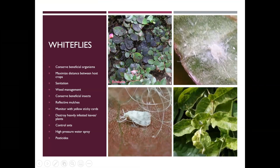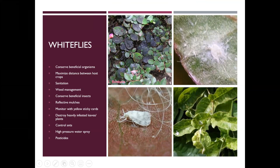Whiteflies — oh, that's a terrible one. Whiteflies are another small soft-bodied insect with piercing-sucking mouthparts that cause yellowing, curling, and stunting. They are honeydew producers, which leads to sooty mold, and they're found on the undersurface of leaves. The immatures are stationary, but the adults have wings and are capable of flying around. If you see something that looks like a white gnat coming out from under the surface of a leaf, turn that leaf over and see if you have a whitefly population.